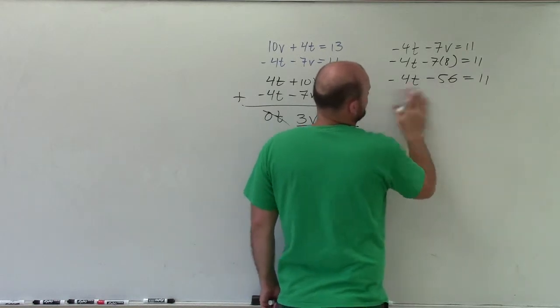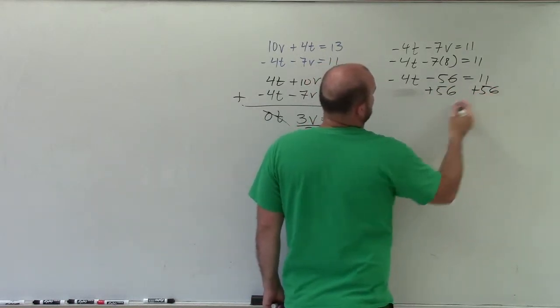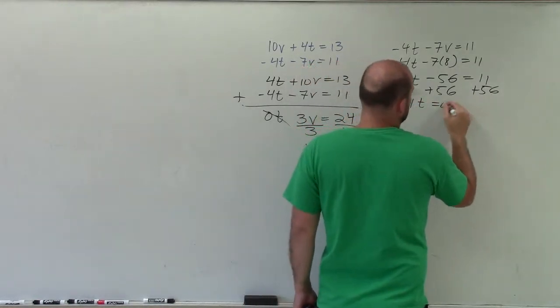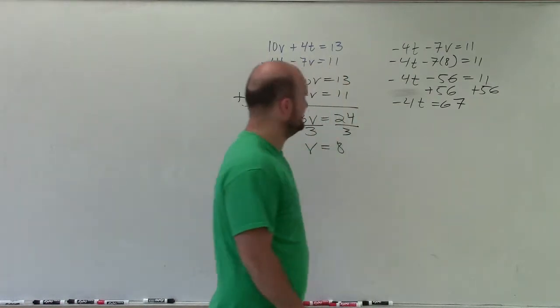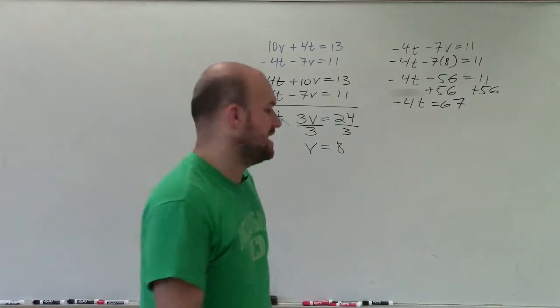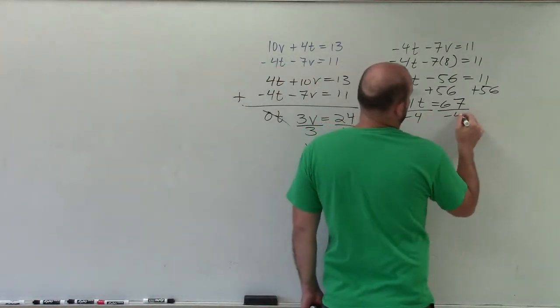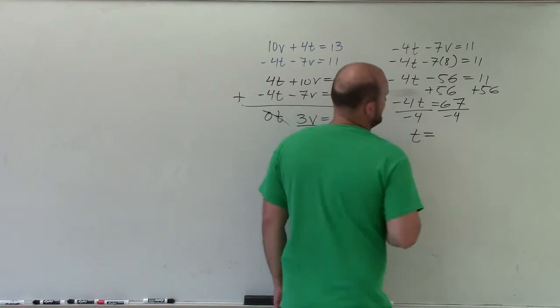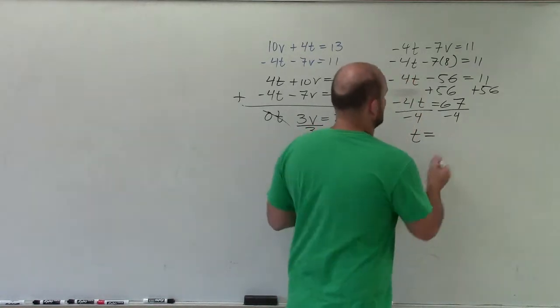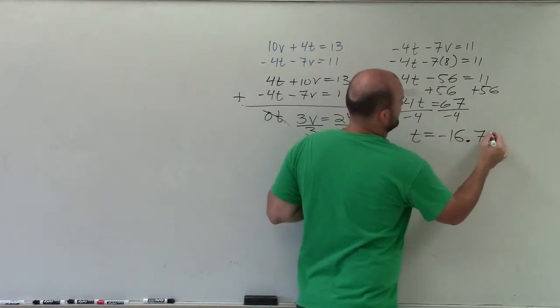Oh, what am I doing? So I got to add 56, add 56, add 56. So negative 4t equals 67, which I do not believe 67 is going to go in there. It does not. So let's divide by negative 4, divide by negative 4. 4t is going to equal, I believe, 16 and 3 quarters, or a negative 16.75.